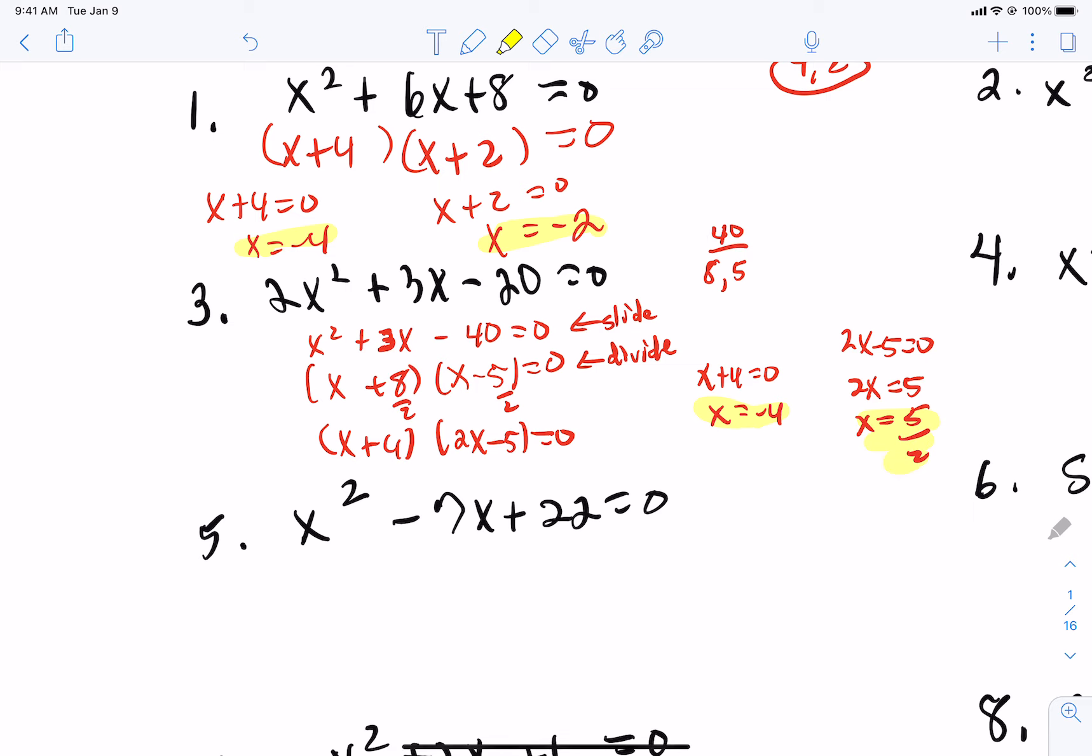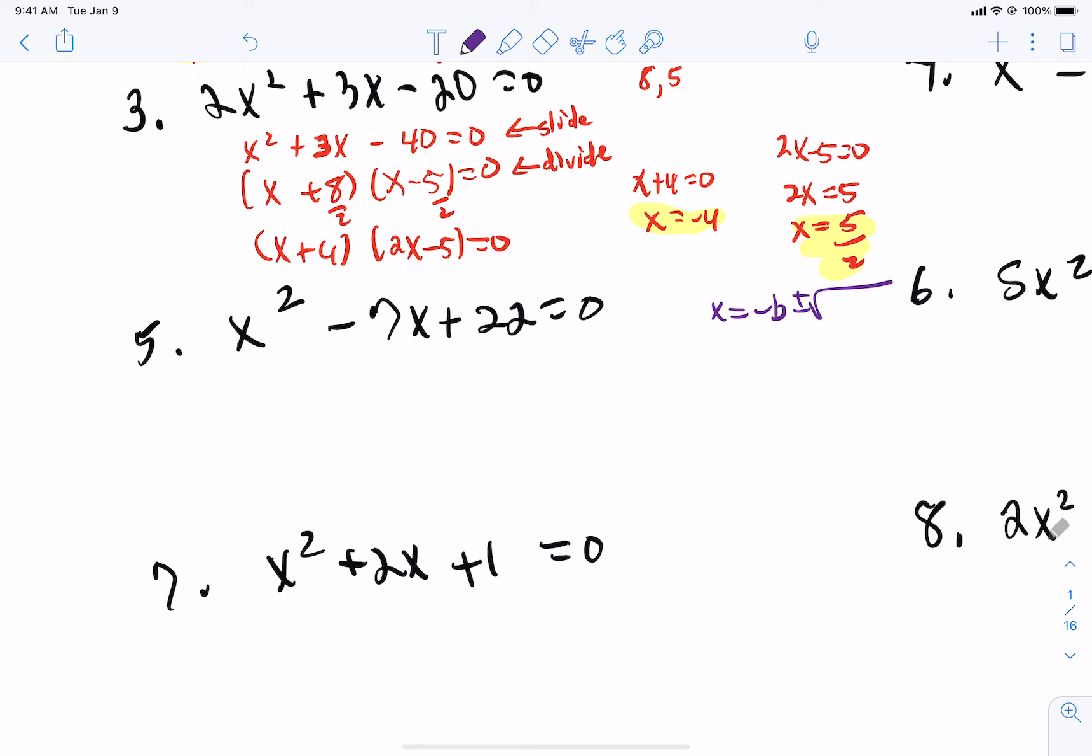But let's say it doesn't seem to want to factor, or you're just really not good at factoring. Let's do number 5. Let's use the quadratic formula. So for number 5, first, if you're going to use the quadratic, let me write it over here on the corner here. So it's going to be negative b plus or minus the square root of b squared minus 4ac all over 2a's.